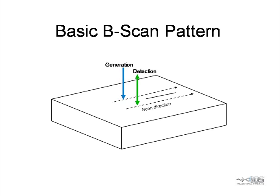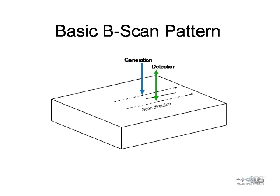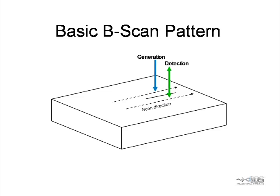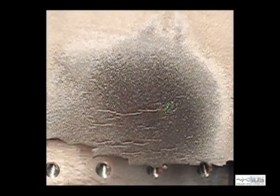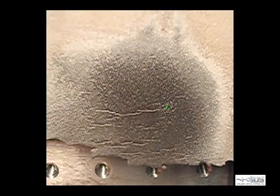For scanning, both beams are moved parallel to an individual crack. In this video, we show both beams being scanned along a single crack. The beam spacing is 4 millimeters. The generation spot looks large only because it is overexposed.